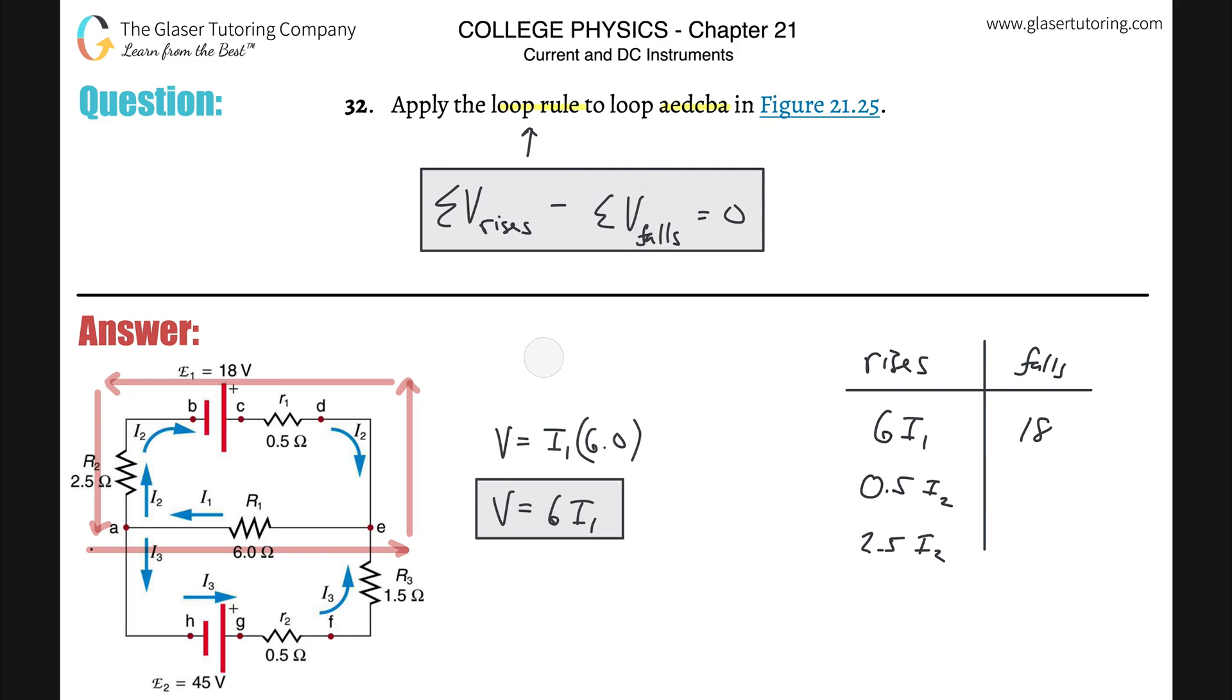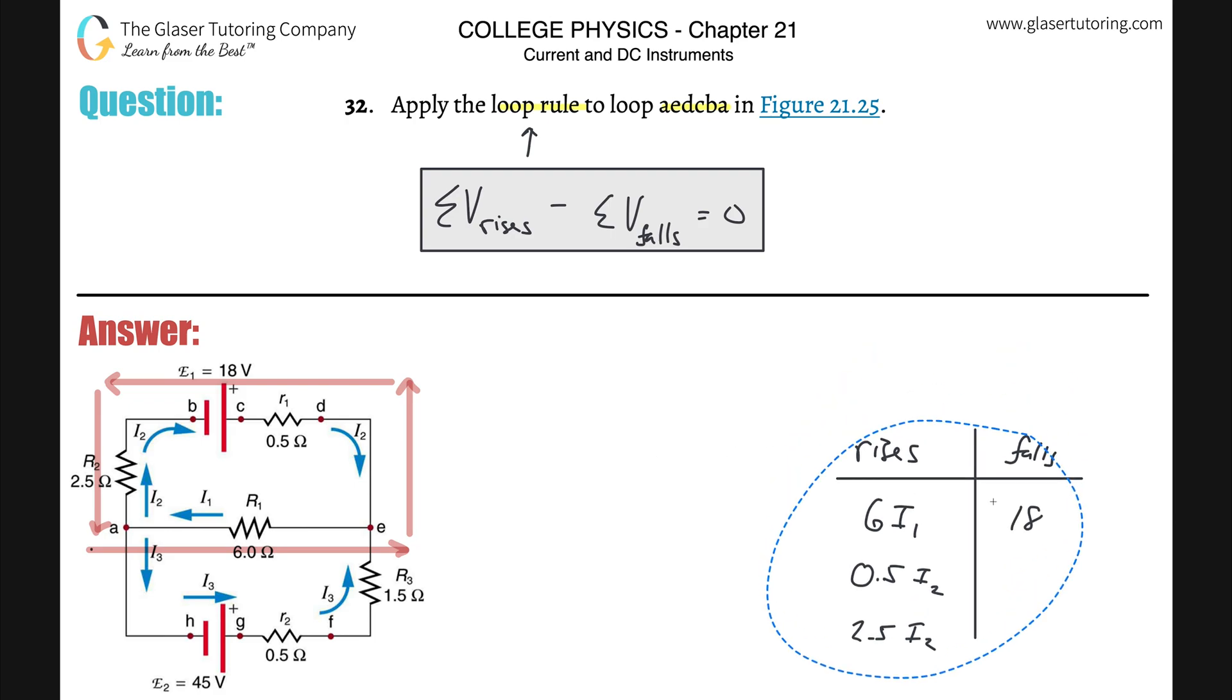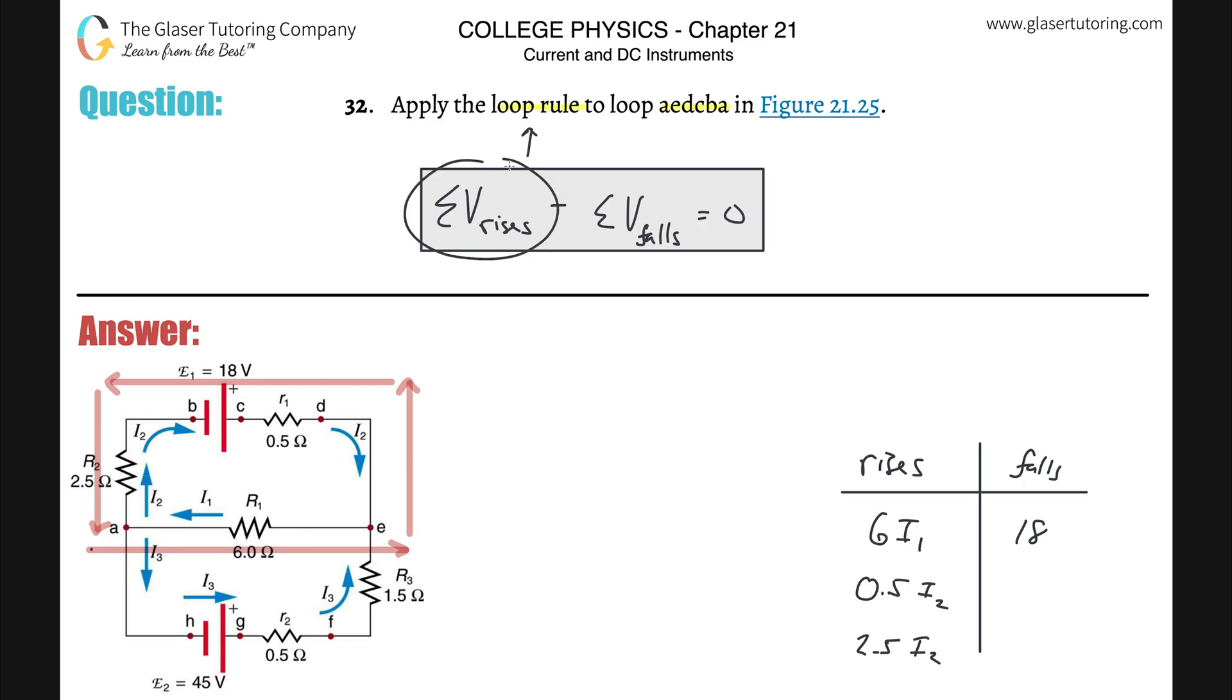Now all we've got to do is simply just plug this on into the formula. All we're going to do now is take, as it says, the sum of all of the potential rises. So sum all of the rises. You're going to take 6I1 plus 0.5I2 plus 2.5I2. And then you're going to subtract from that the sum of all of the potential falls. There's only 1, so that's an 18. And that's going to equal 0. And this is loop rule now applied to the circuit A, E, D, C, B, A.